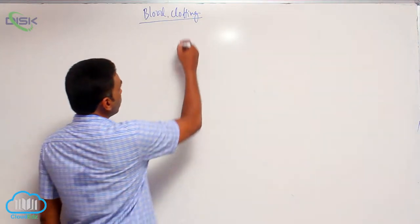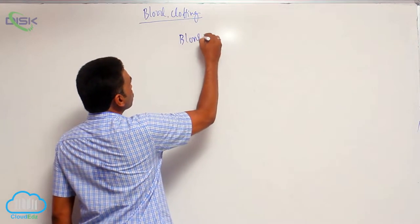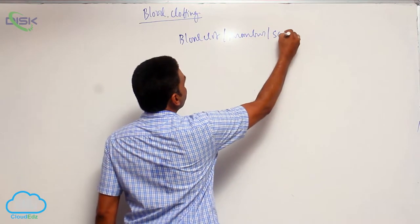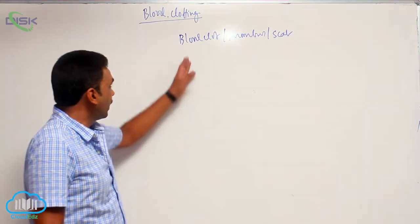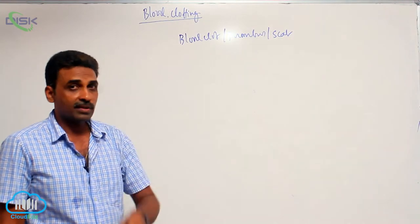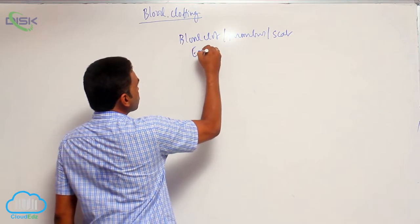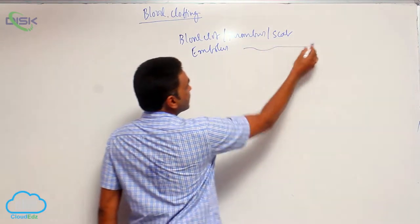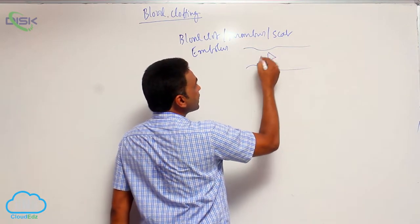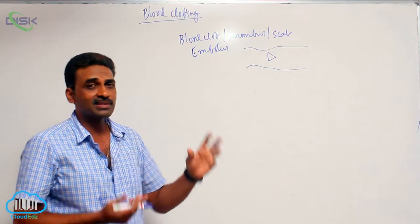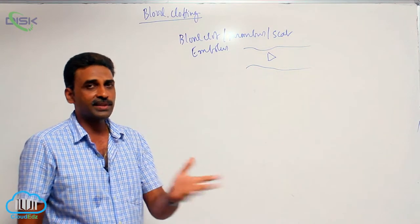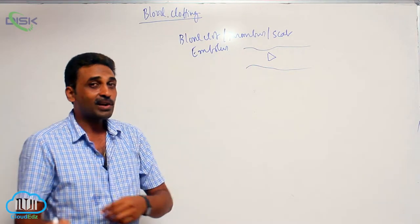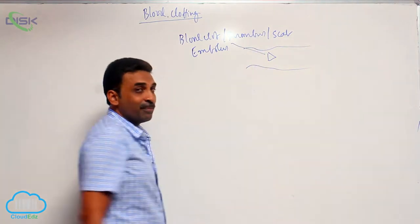The blood clot is also called thrombus or scab. A blood clot inside blood vessels is generally removed by the immune system. But under certain conditions, you can see a free-floating blood clot inside the blood vessels. It is called an embolus.